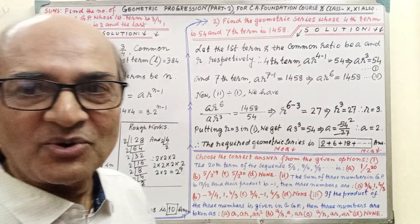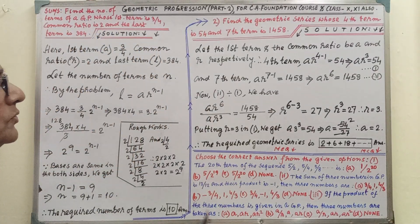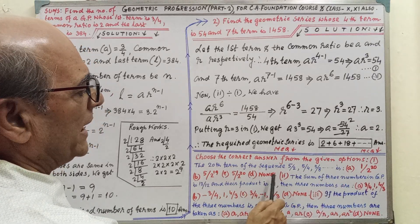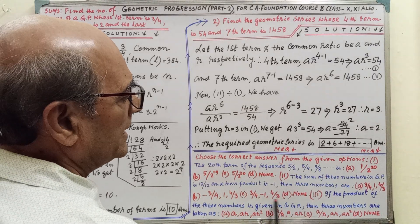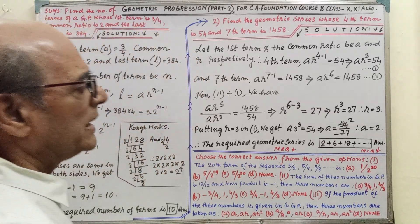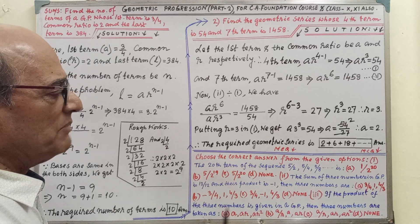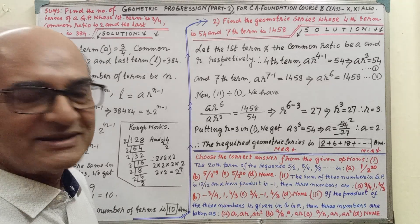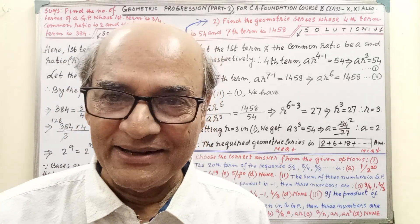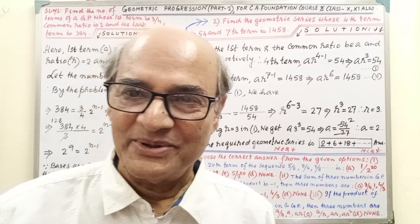Now MCQ: choose the correct answer from the given options. Statements and options are given clearly in each sum. You have to follow the steps and then you will give the tick marks. Answer is not given here. You know very well, answer you will get in next source. Okay, thank you everybody.